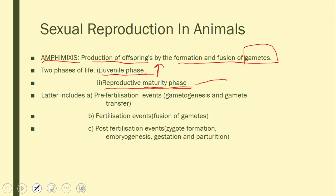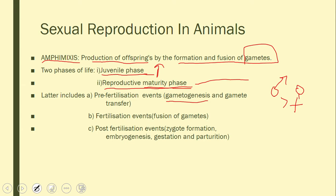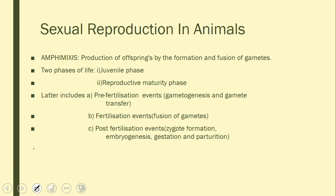When the sex organs mature, gametes are formed — male and female. These gametes are then transferred. After transfer, fusion of gametes occurs, which we call fertilization. After fertilization, a zygote is formed, which then undergoes divisions to form an embryo. Following this there is the pregnancy period called gestation, and finally there is birth, which is called parturition.